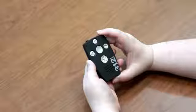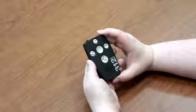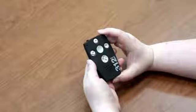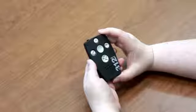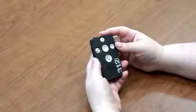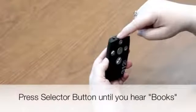The Milestone 312 supports talking books in DAISY and NLS format. These books are different than conventional audio books because they provide an extensive amount of navigation inside the book. The formats supported by the Milestone also include the Audible audio books format. To start using the books, press the selector button until you hear books.